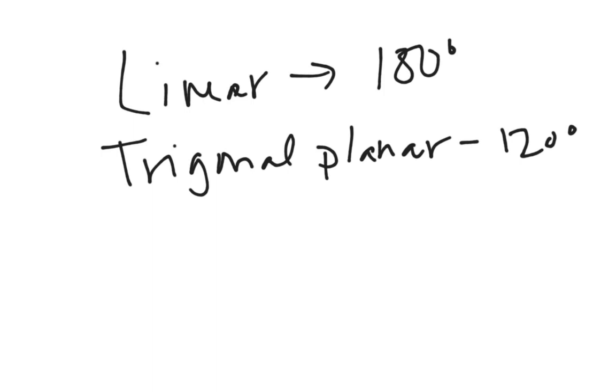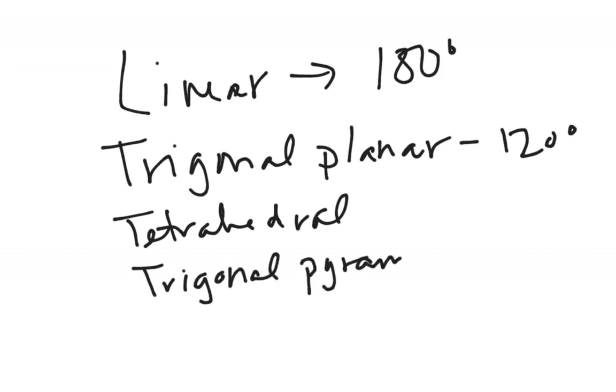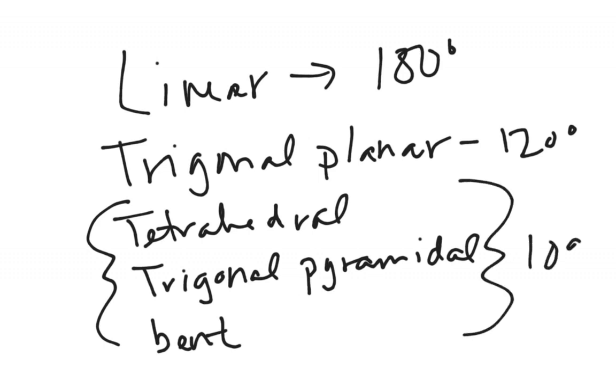Trigonal planar will be 120 degrees. Tetrahedral, trigonal pyramidal, and bent all have the same basic structure, but they have a different amount of lone pairs.